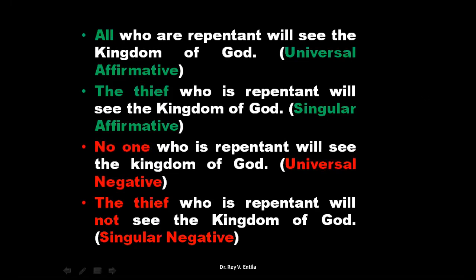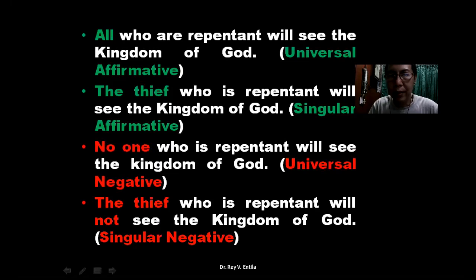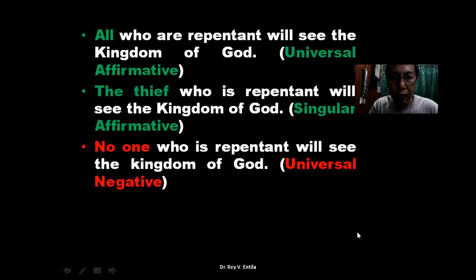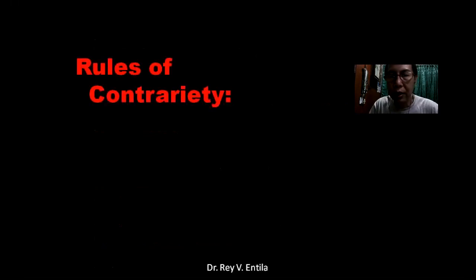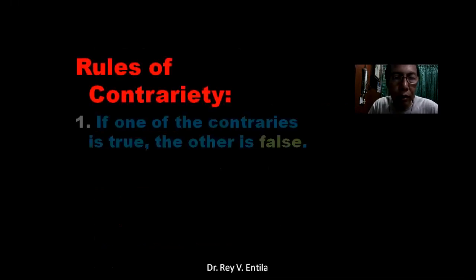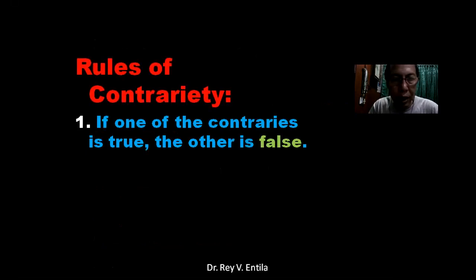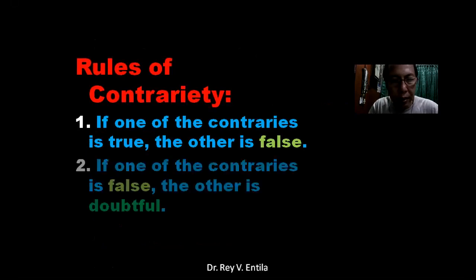So our examples are clear: contrary is universal versus universal — one is affirmative, the other is negative. Rules of contrariety, number one: if one of the contraries is true, then the other is false.